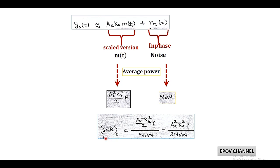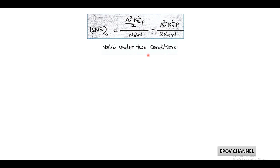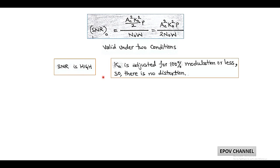This output SNR is valid only under two conditions. First, high signal-to-noise ratio — we assume the signal is much larger than noise, using the approximation. Second, for distortion-less performance, amplitude sensitivity KA is adjusted such that we get 100% or less modulation.